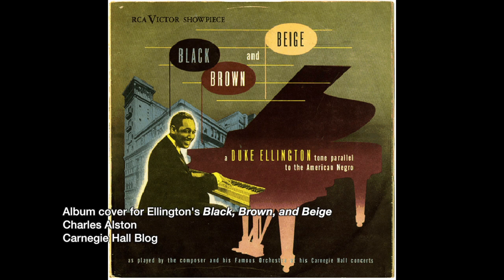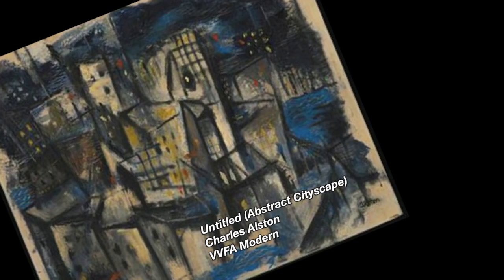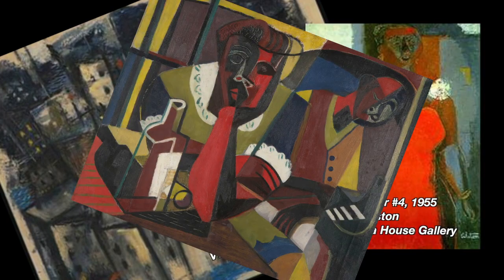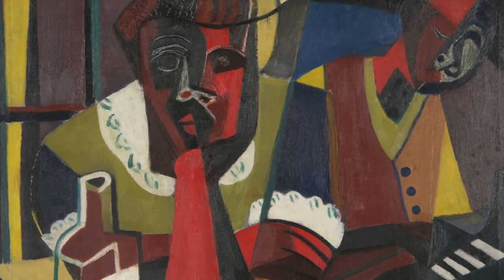Well acquainted with the jazz world, Alston designed record covers for Duke Ellington. And during the 1930s and 1950s, his paintings were heavily influenced by the music scene in Harlem.